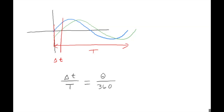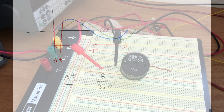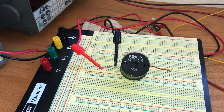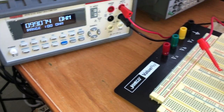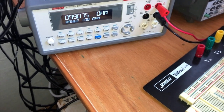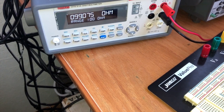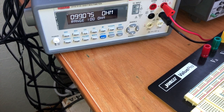Before we get started with our frequency measurements, let's look at the resistance of the resistor. It's marked as a 100 ohm resistor, but when I measure it with a multimeter it looks like it's just a little over 99 ohms, so we'll use that in our calculations.